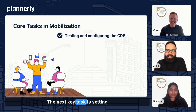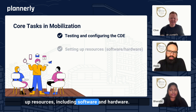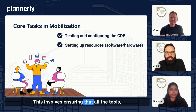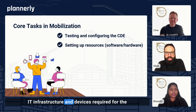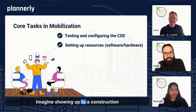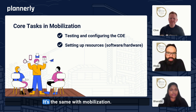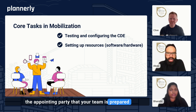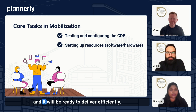The next key task is setting up resources, including software and hardware. This involves ensuring that all the tools, IT infrastructure, and devices required for the project are ready to go. Imagine showing up to a construction site without the right tools — it's the same with mobilization. Having your resources defined and in place shows the appointing party that your team is prepared and will be ready to deliver efficiently.